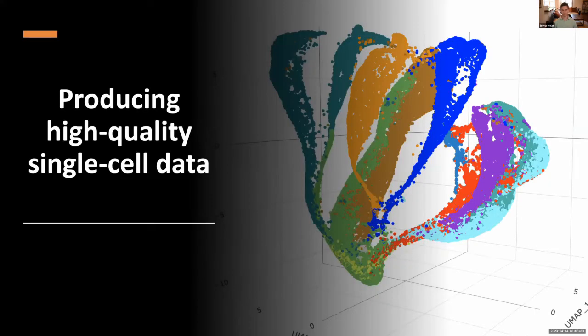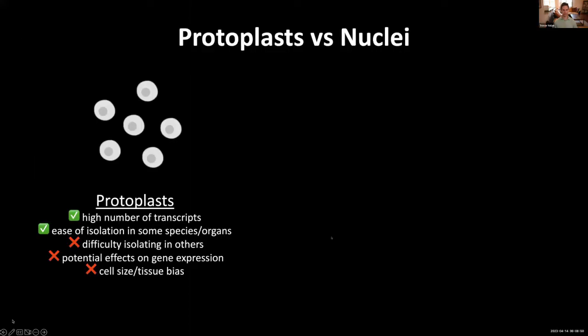In terms of producing high quality single cell data, one of the first things to ask yourself is which biological entity would you most benefit from profiling. In plants, we can digest away the cell walls to produce protoplasts, which allows us to access a high number of transcripts in whole cells, and these are easy to isolate from some species and organs — for example, from roots. However, protoplasts can be difficult to isolate from other species or more difficult organs, there are potential effects on gene expression such as stress-related genes, and we can see cell size or tissue biases.